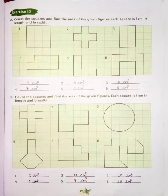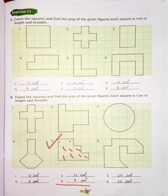Now number 5 — counting 1, 2, 3, 4, 5, 6, 7, 8, 9. So our answer is 9 square centimetres.